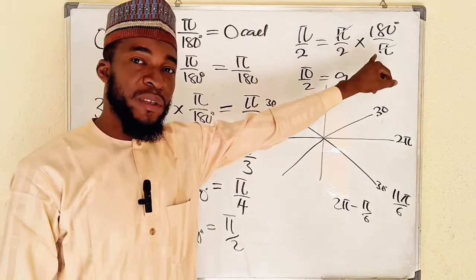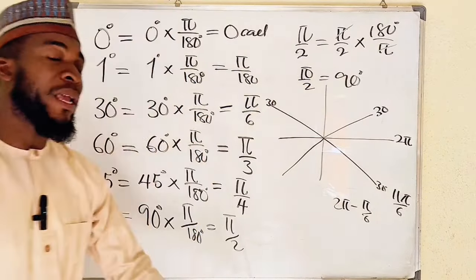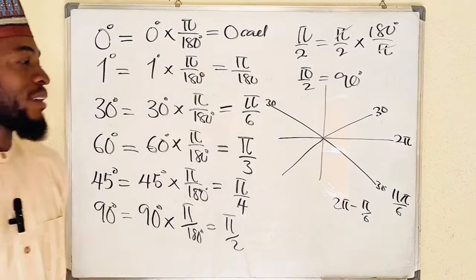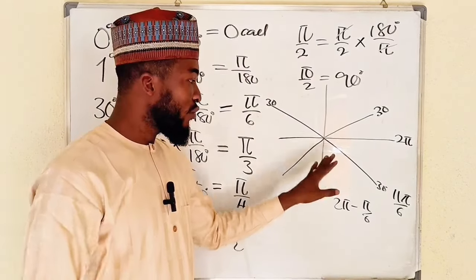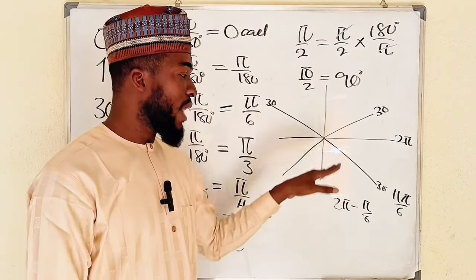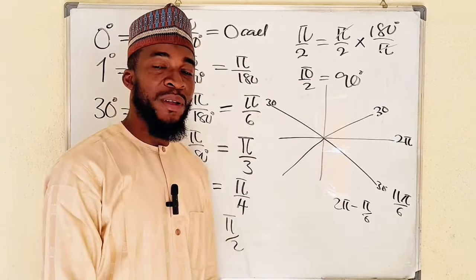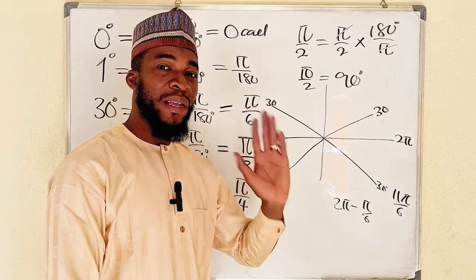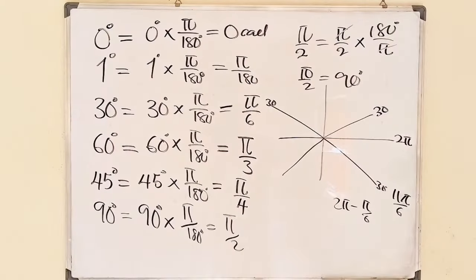So to summarize: conversion from degrees to radians — multiply by π divided by 180. Conversion from radians back to degrees — multiply by 180 divided by π. As simple as that. In the next tutorial we are going to go deeper into the unit circle. Bye bye!